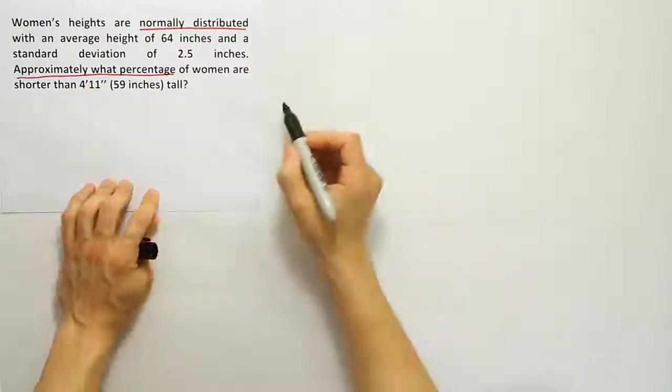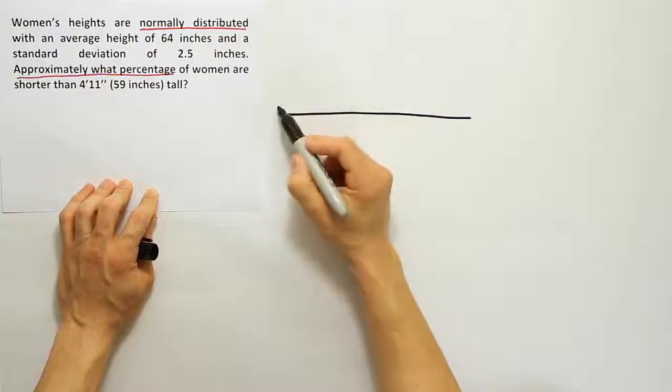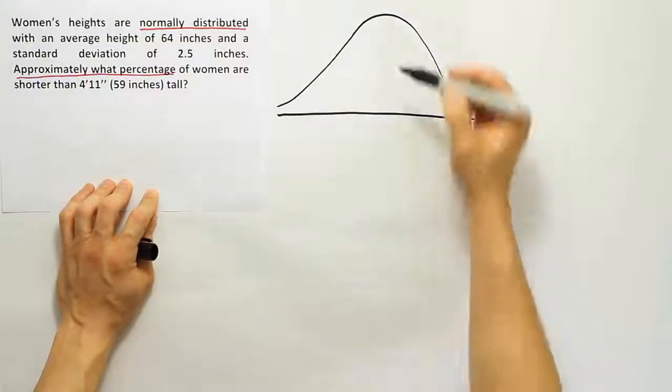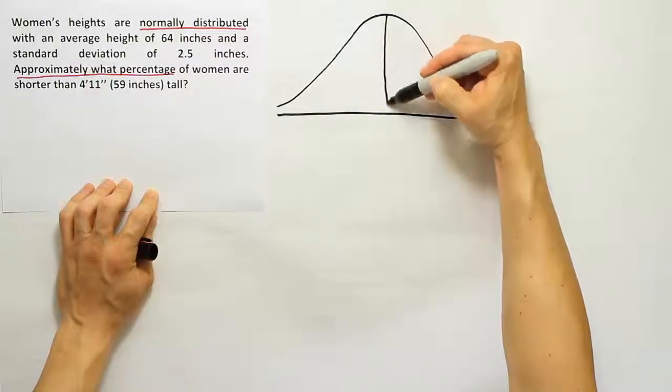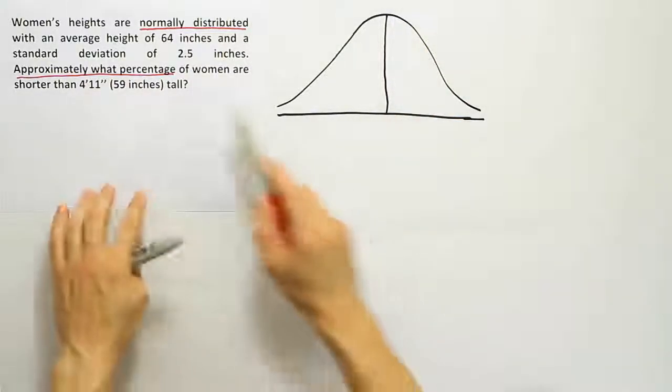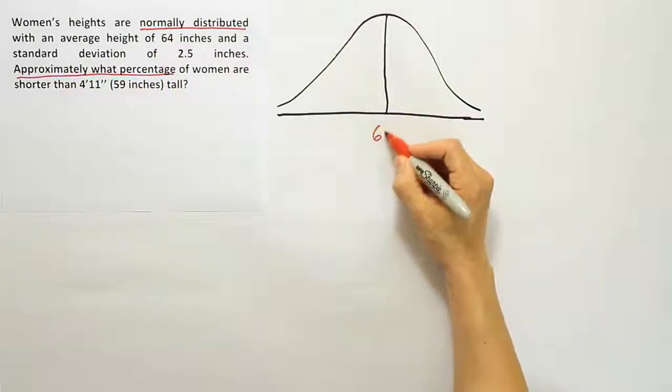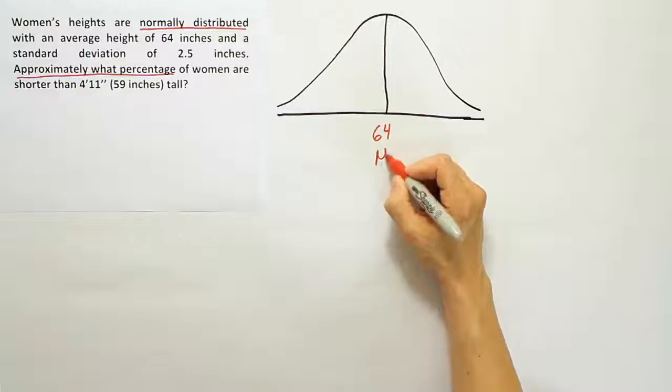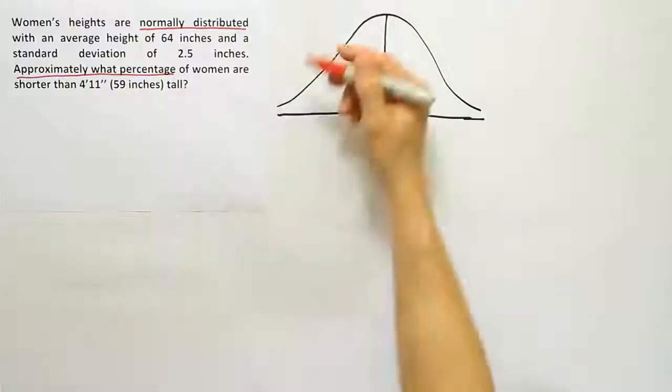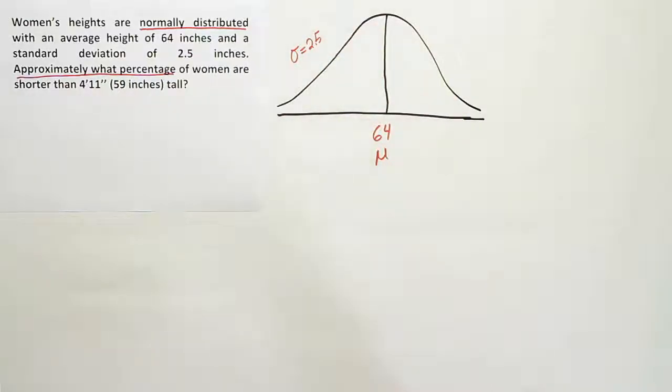Whenever you're dealing with an empirical rule problem, I recommend drawing the bell curve. I think that's very helpful. So we're going to go ahead and draw a bell shaped curve as best as we can here. And I'm going to label the information from the problem on the curve. So what I'm going to do is look at this average height of 64. I'm going to go ahead and label that in the middle. And I'm going to call that the mean. And then I'm going to say that the standard deviation is two and a half. And I'll put that up there in the left hand corner.